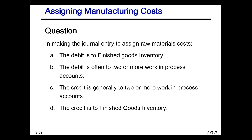Another question: in making the journal entry to assign raw materials — A: the debit is to finished goods inventory; B: the debit is often to two or more WIP accounts; C: the credit is generally to two or more process accounts; or D: the credit is to finished goods inventory. Assigning raw materials is at the beginning stage, so those will go into various WIP accounts — the answer is B. Some materials get assigned to one WIP, others wait until they go into another department.